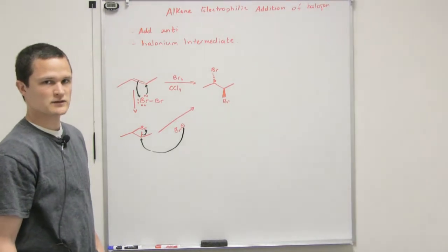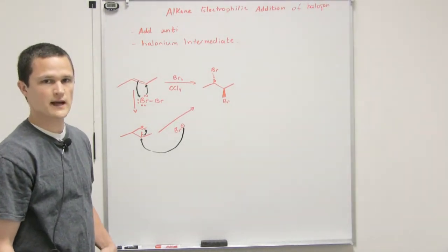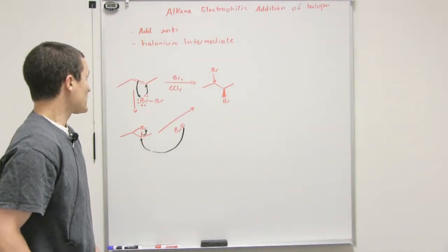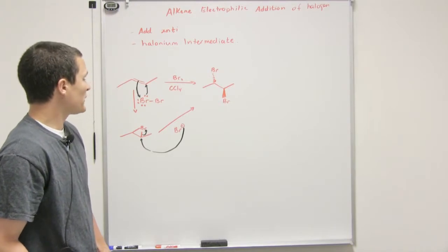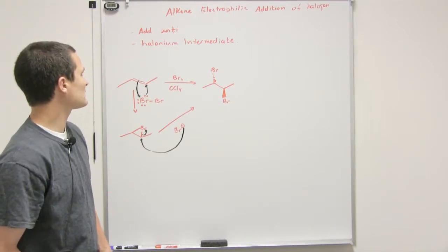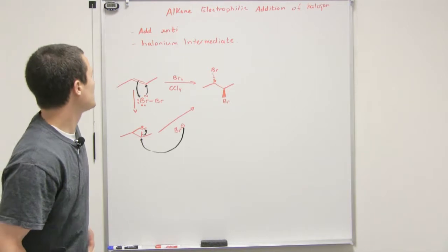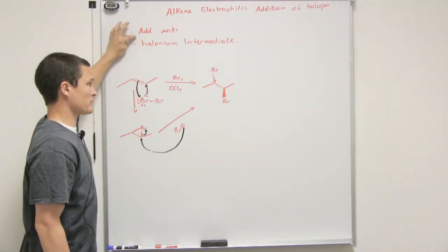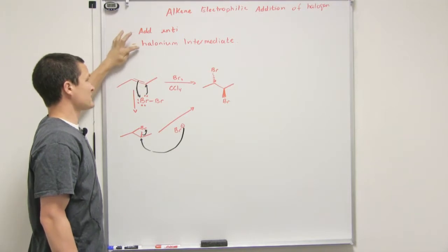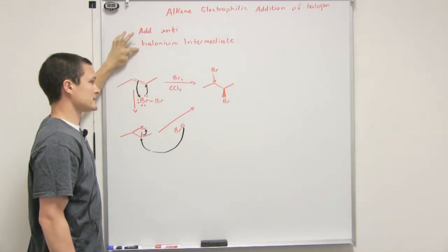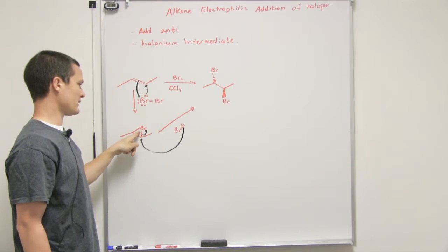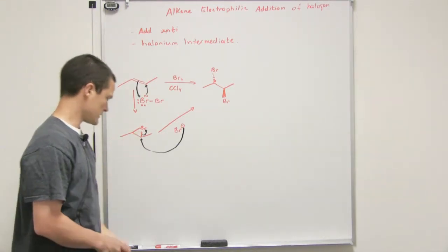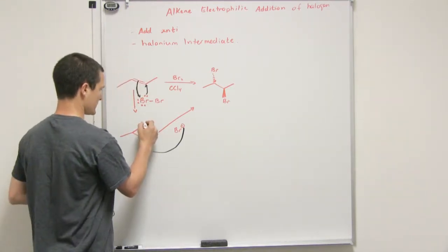All right, we're going to talk about the electrophilic addition of halogens to alkenes. There are two things to think about: one is that we have anti addition, and I'll explain how that works in the mechanism. We also have this thing called the halonium intermediate, which is a cyclic halide and the alkene, which is this thing right here that should have a positive charge on it.